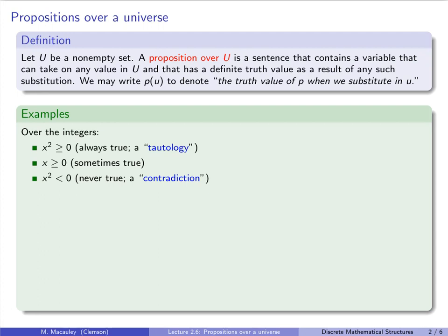However, x² < 0 is still a proposition over the integers because all that we require is that any integer has a definite truth value as a result of any such substitution — and yes, the truth value in this case is false. A non-example would be something like x + 2. If we substitute an integer, it doesn't make sense to call such a substitution true or false, so this is not a proposition over the integers.